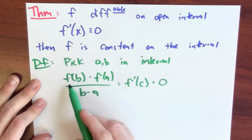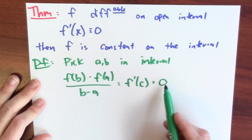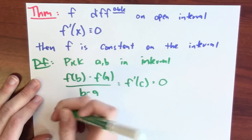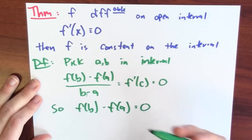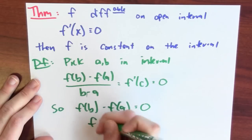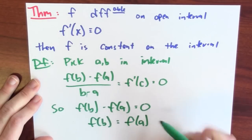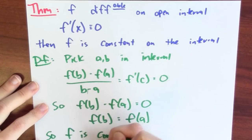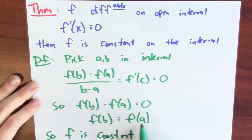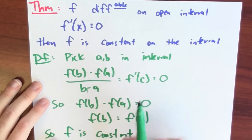This means that no matter which a and b I pick, (f(b) - f(a)) / (b - a) equals zero. The only way a fraction equals zero is if the numerator equals zero, so f(b) - f(a) = 0. Adding f(a) to both sides, I conclude that f(b) = f(a). What I'm really saying is that no matter which a and b I pick, f(a) equals f(b). So f is a constant function — any two output values are the same, meaning there is only one output value, which is exactly what it means for the function to be constant.